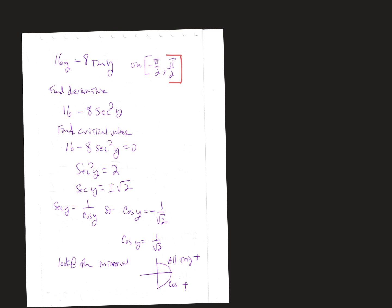So then we're going to take this and set that equal to zero. I subtracted 16, divided by negative 8, and got 2. And then because it's secant squared, I took the square root. So secant y equals ±√2. When we're taking the square root, remember we get a plus and a minus.